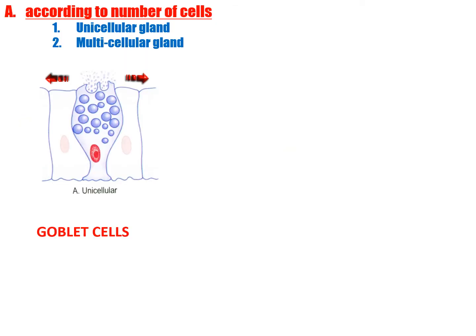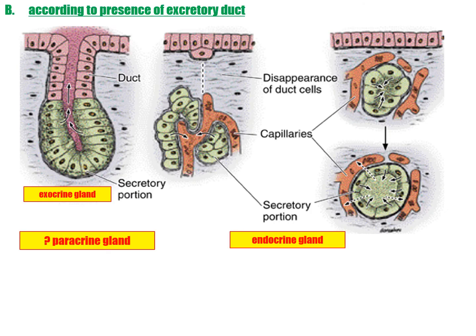Unicellular glands — goblet cells — are found individually dispersed in the epithelium of the GI tract and respiratory tract, where they protect the lining. They derive their name from their goblet shape. They have a thin basal and expanded apical part; the cytoplasm is filled with membrane-bound secretory droplets which displace the cytoplasm to the periphery and push the nucleus toward the base.